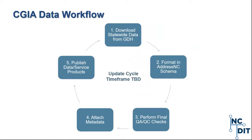CGIA will determine the timeframe for updates moving forward depending on the level of effort and the ability to automate these processes. This could be as frequent as once a month or potentially more often. The goal is to have an updated statewide layer created and maintained on a regular basis, provided by local governments using a mechanism already in place for harvesting these updates.